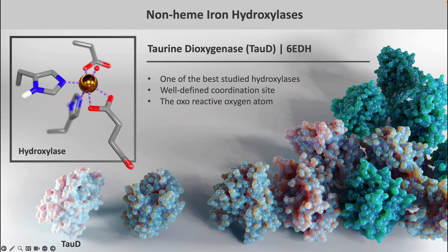To highlight the differences between halogenases and hydroxylases, let's take a closer look at the active sites, starting with TauD, which is one of the best studied non-heme iron hydroxylases. Here I've highlighted the active site of TauD, which I feel is representative of the typical active site observed for hydroxylases. You can see that there are two histidines and either an aspartate or glutamate coordinating the iron center. In the reactive state, there's also a reactive oxo that coordinates the iron center and can react with a target hydrogen. The halogenases, on the other hand, look very similar, with the exception that this aspartate or glutamate is mutated to a glycine or alanine to make room for a chlorine atom.